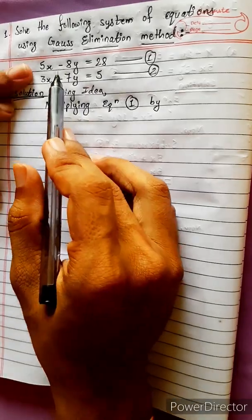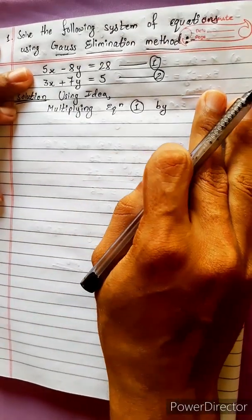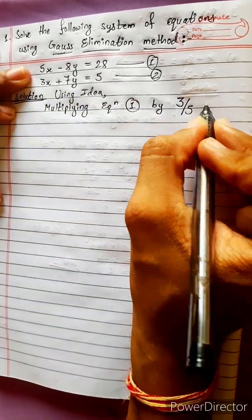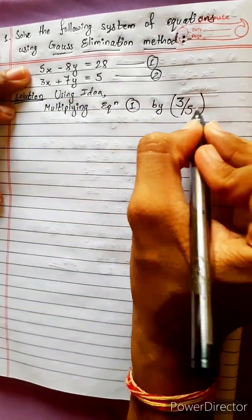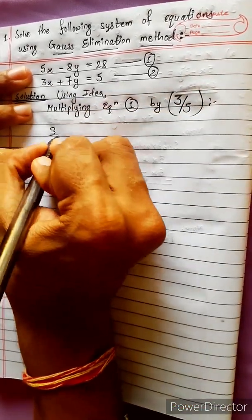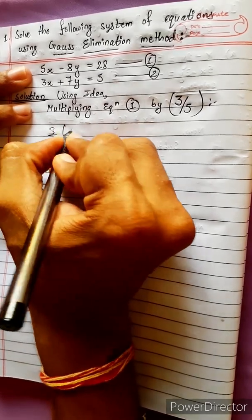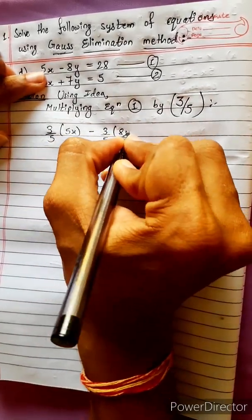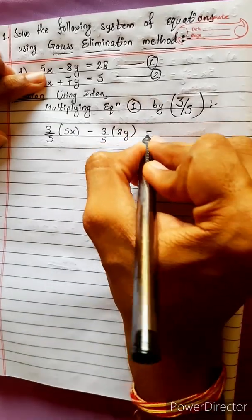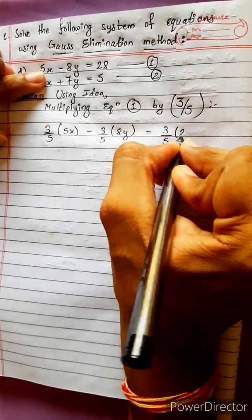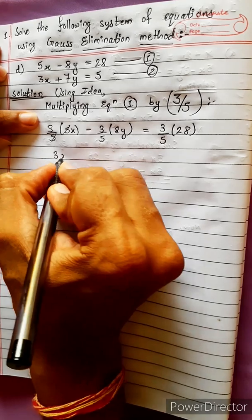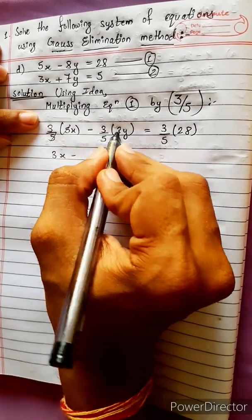Suppose equation 1 is multiplied by 3/5. We multiply 3/5 into 5x minus 3/5 into 8y, which equals 3/5 into 28. The 5 cancels, giving us 3x minus 24/5y equals 84/5.